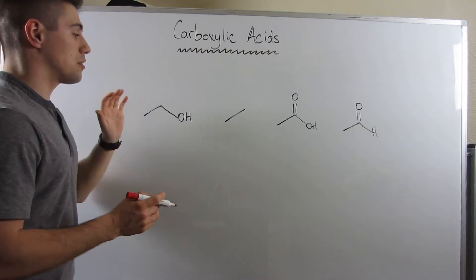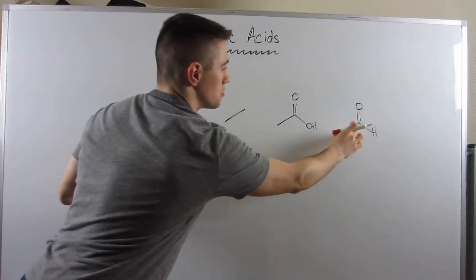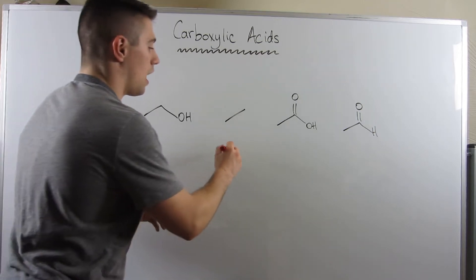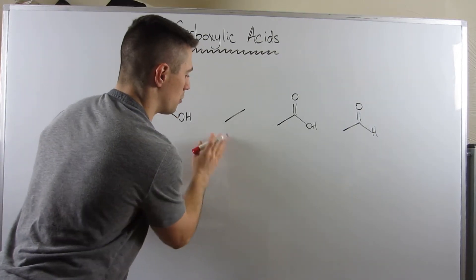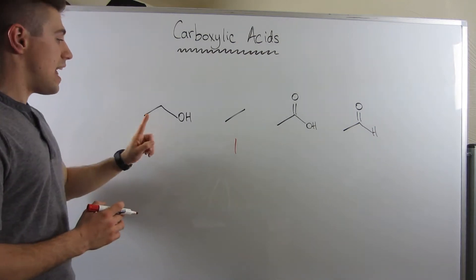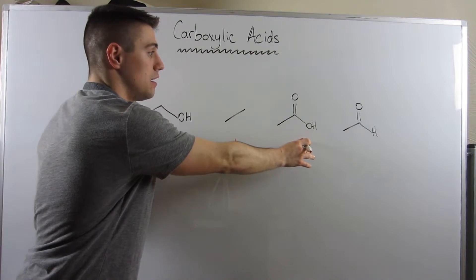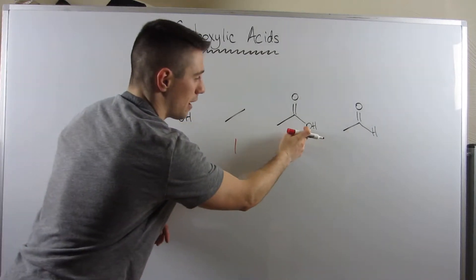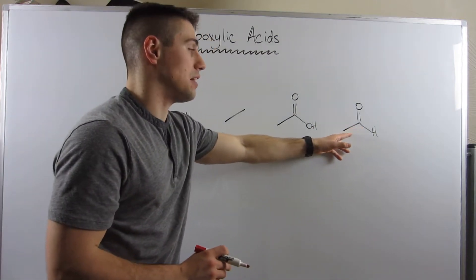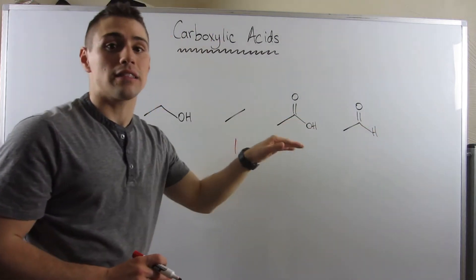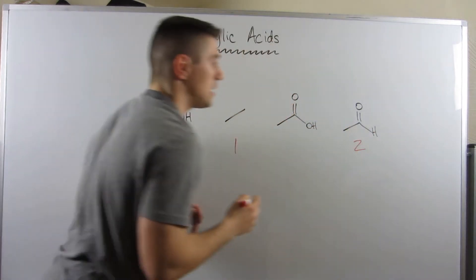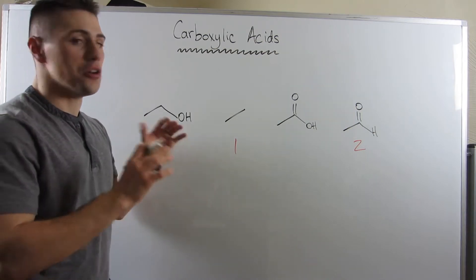All four compounds have 2 carbons. Ethane is very bland — it only has London dispersion forces — so it gets rank 1, the lowest boiling point. The 2-carbon aldehyde has no electronegative atom directly bonded to hydrogen, so it can't hydrogen bond. It only has a small dipole from polarity, so it gets rank 2. Ethanol and acetic acid both have an electronegative atom bonded to hydrogen, so these two can hydrogen bond.